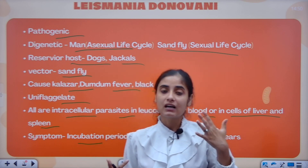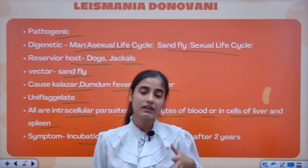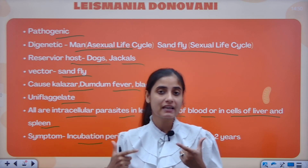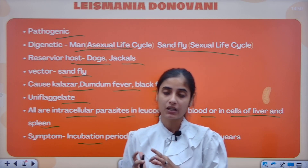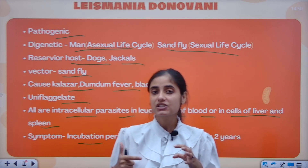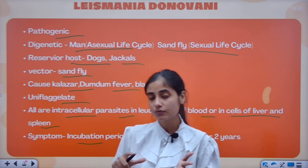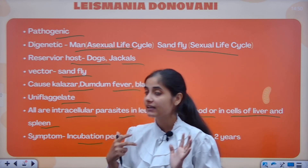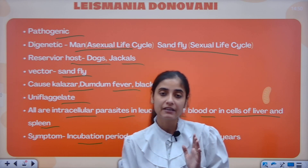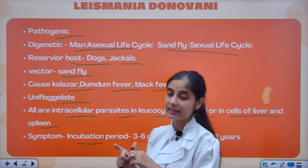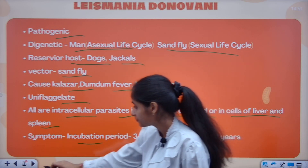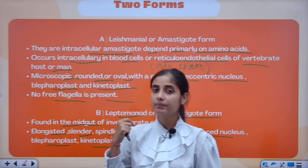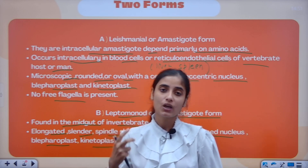Leishmania is microscopic and uniflagellate. The Amastigote form is found in vertebrates — in man — and the Promastigote form is found in the sandfly. The sandfly is the vector. The Amastigote form has no free flagellum, and it is diagenetic. It acts in human blood, liver, and spleen, while in the sandfly it acts in the midgut. It is intracellular, attacking within the cells of the liver, spleen, and blood cells of vertebrates.